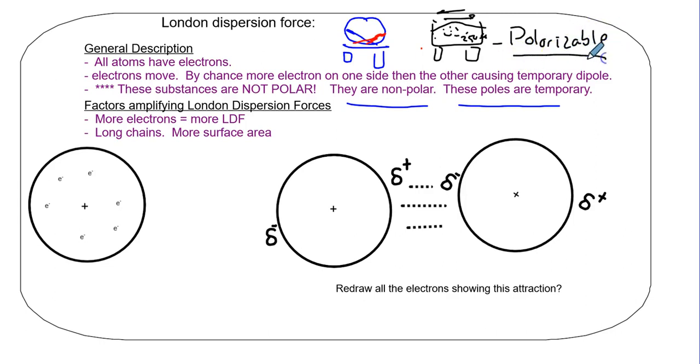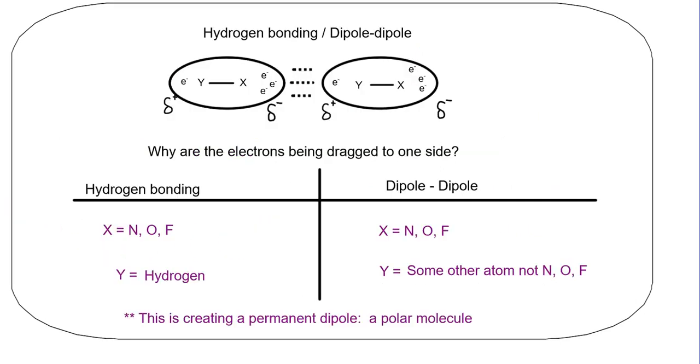This idea of electrons swaying back and forth is a term we call polarizability. Water is more polarizable than gravel. It sloshes back and forth easily, temporarily. What are the factors that affect whether something is more polarizable? More electrons, long chains. Take this atom, we have a temporary dipole with more electrons on one side. If this thing temporarily forms, it automatically pulls another guy temporarily.